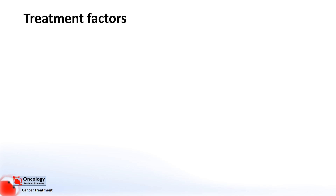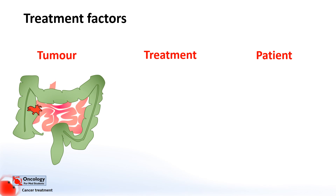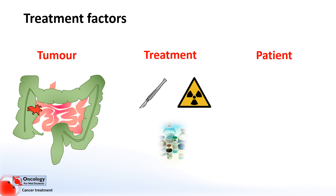Next I want to talk about how treatments are selected. We can think of this in terms of three main groups of factors: tumour, treatment, and patient factors. The first is tumour — what is the type of tumour, and how far is it spread? This will often dictate whether we can have a chance of curing the cancer or whether we need to take a palliative approach. In general, cancers that have spread are rarely curable. Treatment factors will often depend on how available a treatment is and how likely it is to work as intended without causing significant side effects.